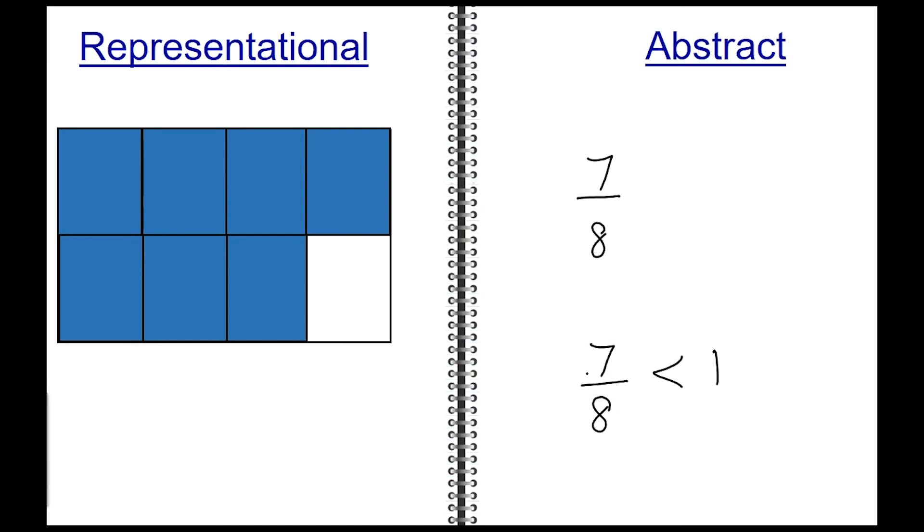And since only 7 of the parts are shaded, 7 eighths is a fraction that is less than 1.